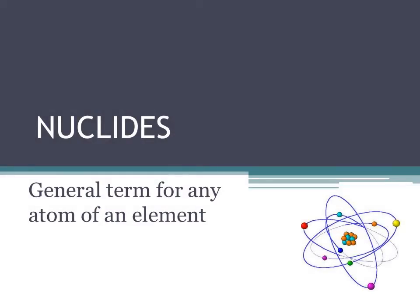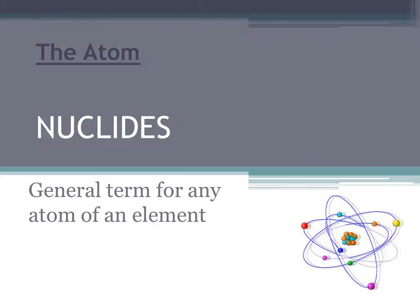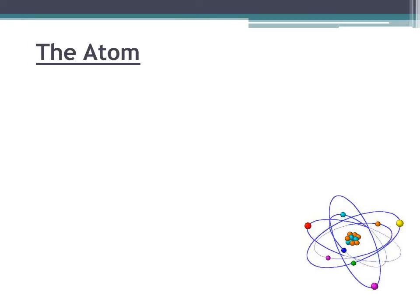After studying the development of the atomic theory, you have seen evidence that the atom is the smallest part of an element that is characterized by its physical and chemical properties. At this juncture, we are going to look at the individual nuclides of particular atoms.